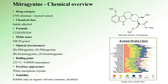Mitragynine's boiling point hits 235 degrees Celsius under 0.00658 atmospheres of pressure. In its freebase form, it has the presence of white amorphous crystals, and in such a form, mitragynine is exclusively soluble in organic solvents like acetone and alcohol. Various Kratom strains contain different levels of mitragynine and 7-OH-mitragynine and two other pharmacologically active alkaloids, namely speciociliatine and corynantheidine.